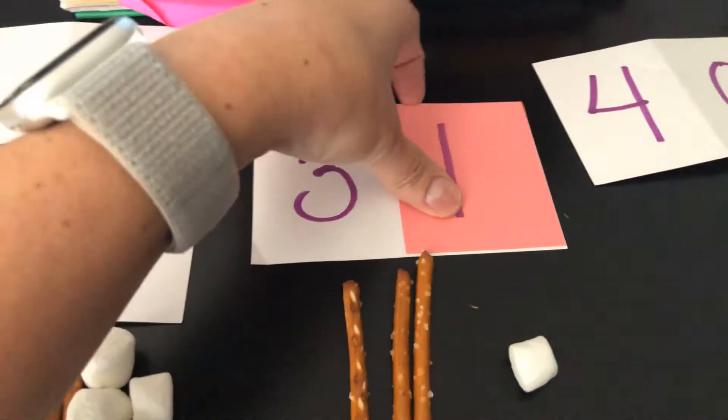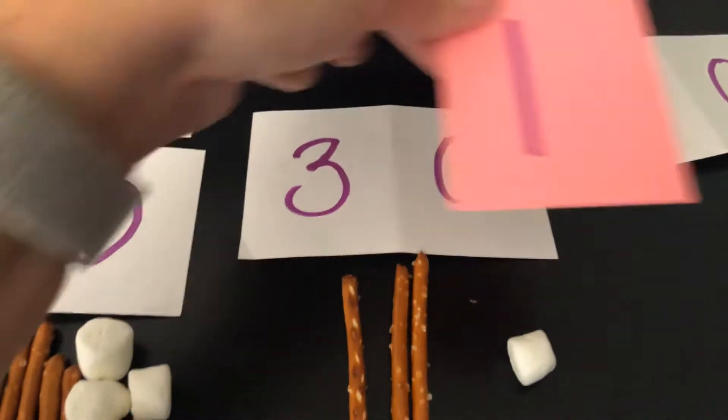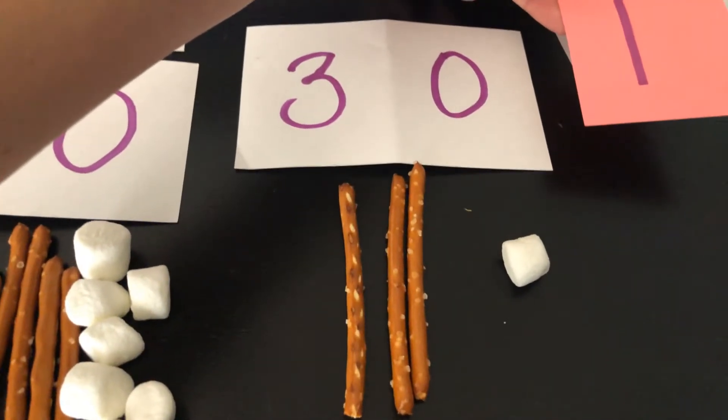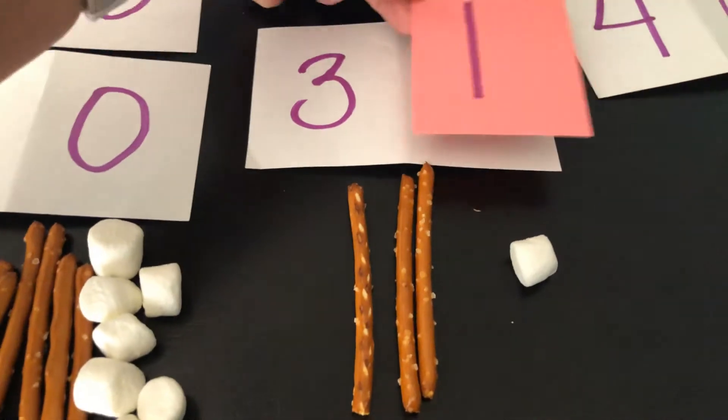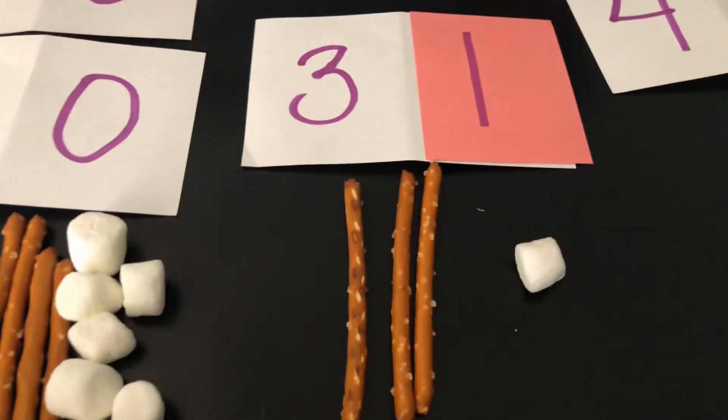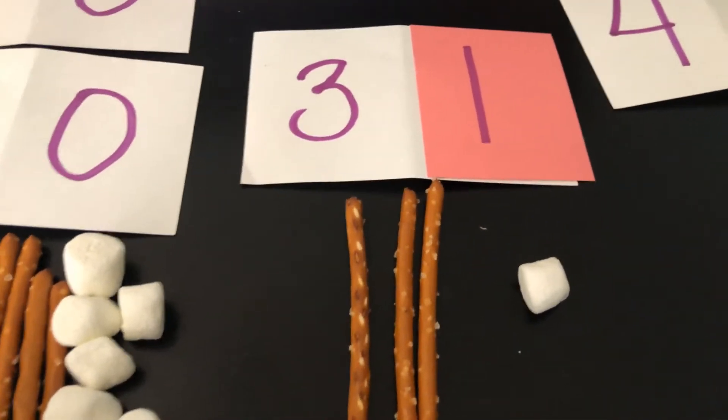Or we also know that we could break apart this number and say, I have 30, that's 10, 20, 30, plus 1, which makes 31 when I'm adding tens and ones.